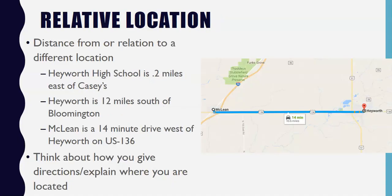The other way to describe location is relative location, which is actually how we talk about where things are more often than absolute. If you're telling somebody how to get somewhere and they've never been there before, you may give them an exact address or absolute location for their GPS, or you could describe where they're going using street names, directions, and how long they'd be on certain roads — that's relative location. Relative location is the distance from or relation to a different location.